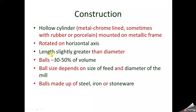The balls usually occupy 30 to 50 percent of the volume — that means if 100 cubic centimeters is the total volume of the cylinder, then 30 to 50 cubic centimeters is occupied by the balls. The size of the balls depends on the size of the feed to be reduced and the diameter of the mill. The balls are usually made of steel, iron, or stoneware.